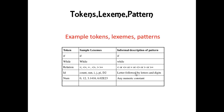Pattern for token 'if' is just 'if'. Pattern for token 'while' is just 'while'. Pattern for token 'relation' is a set of 6 relational operators. Pattern for 'id' is a letter followed by letters and digits. Pattern for 'num' is any numeric constant.